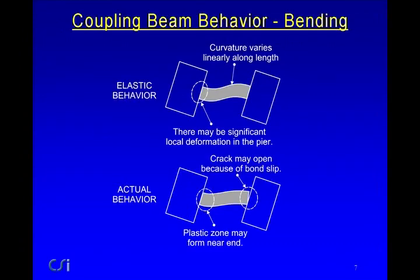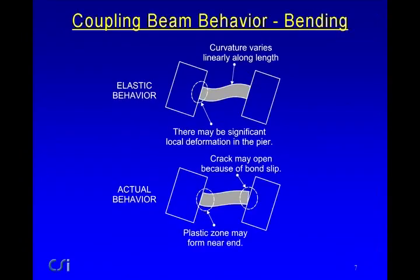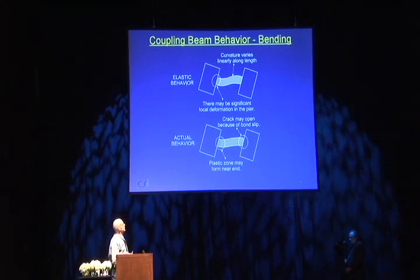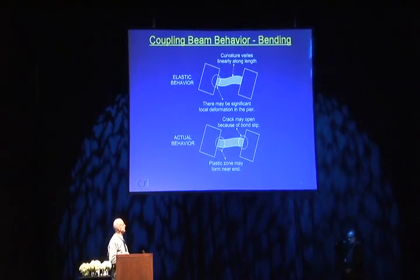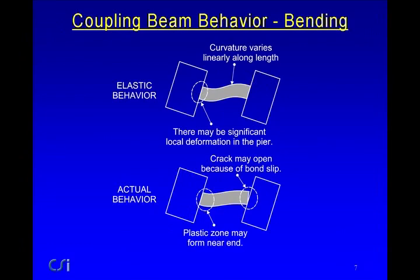Looking at coupling beam behavior in bending — two diagrams, one elastic and one actual. According to elastic behavior, the curvature will vary linearly along the length. Deformations may be substantially shear deformations, which would be constant over the length, or bending, depending on the proportions. There may also be substantial local deformations where the beam meets the pier. The actual behavior is likely to be substantially different: a crack might open at the face of the wall because of bond slip, and if it's controlled by bending, a plastic zone may form near the end.